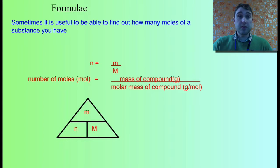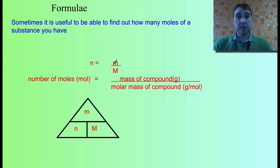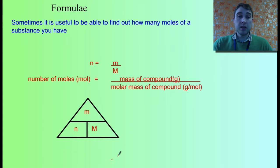Sometimes in chemistry you need to be able to find out how many moles of a substance you have in a certain mass of that substance. And to do that we use this equation: n equals little m on big M. The number of moles in a substance is equal to the mass of that substance divided by the molar mass of that substance. This magical triangle we can use to figure out one quantity as long as we know the other two quantities.